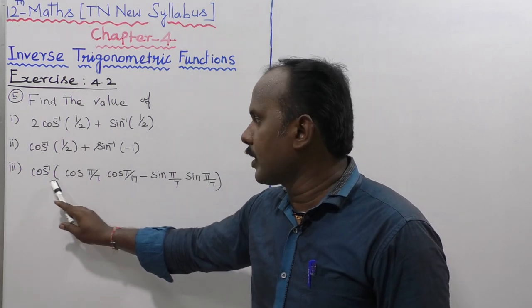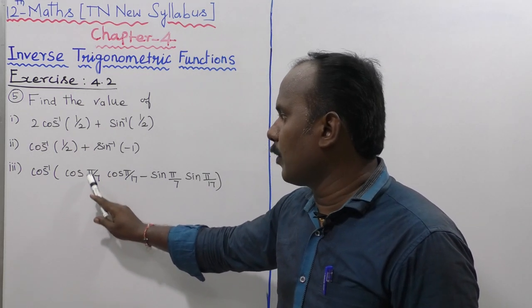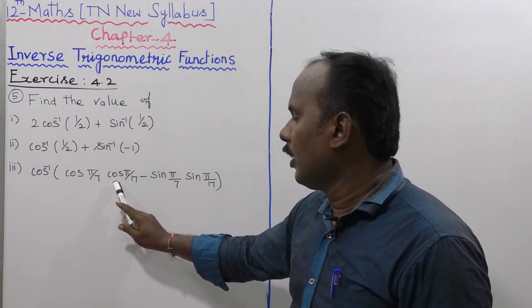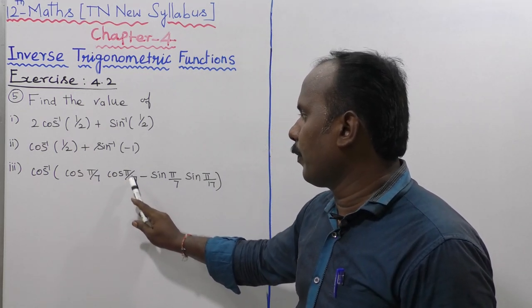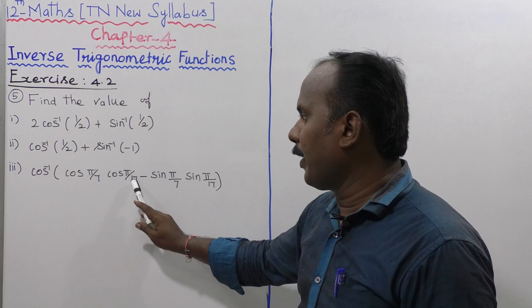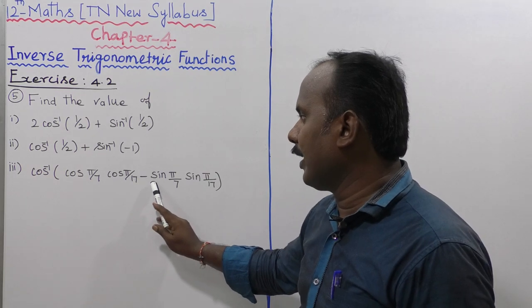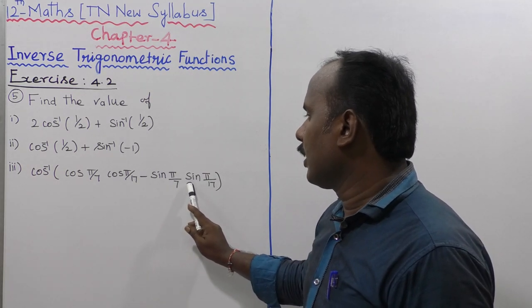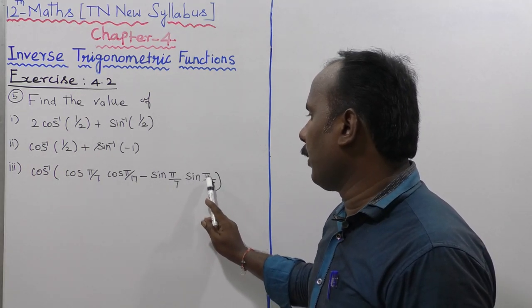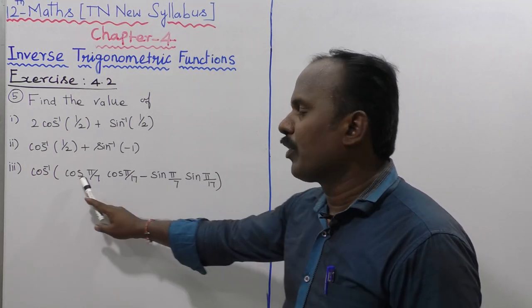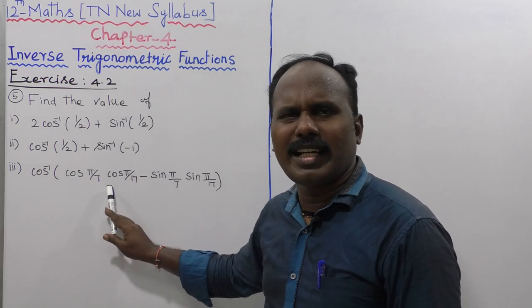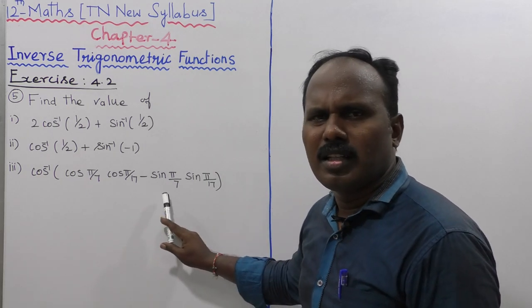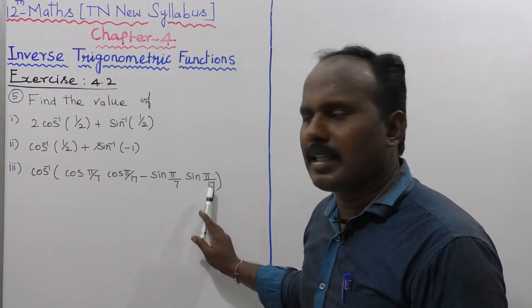Third subdivision: cos inverse of cos of 5 by 7 into cos of 7 by 17 minus sin 5 by 7 into sin 5 by 17. This uses the formula cos A cos B minus sin A sin B.